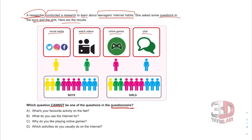Option A: What's your favorite activity on the net? My favorite activity is playing online games, my favorite activity is chatting, watching videos — yes, this can be one of the questions. Option B: What do you use the internet for? I use the internet for social media, I use the internet for online games — yes, this can be a question.